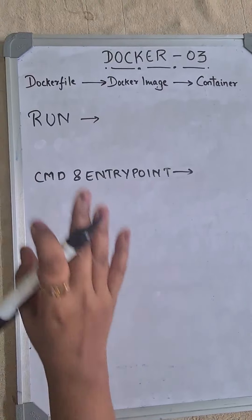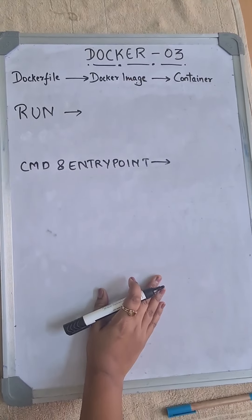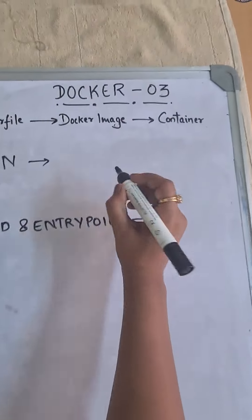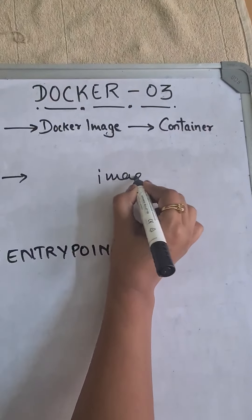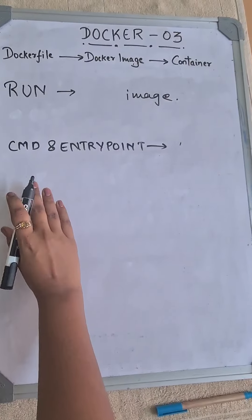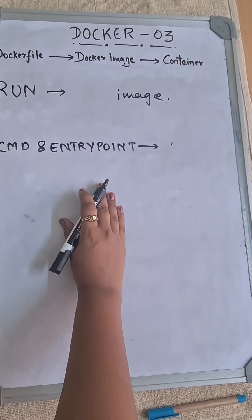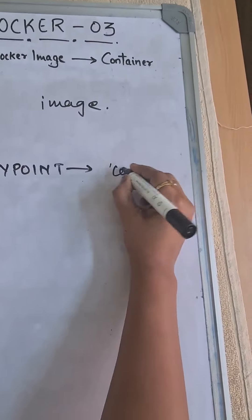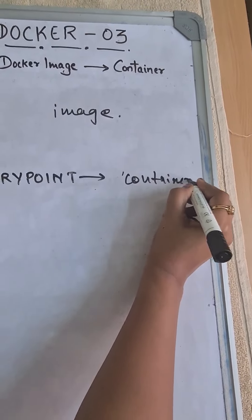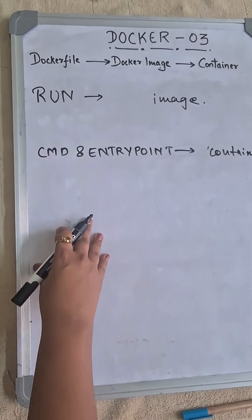So what is the difference between RUN, CMD, and ENTRYPOINT? RUN executes when building the image, while CMD and ENTRYPOINT execute when the container starts. So this is the main difference between them.